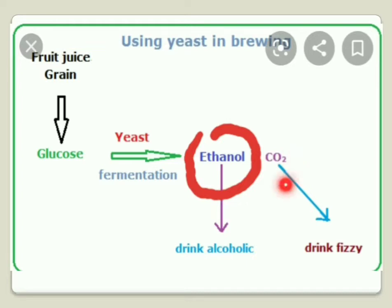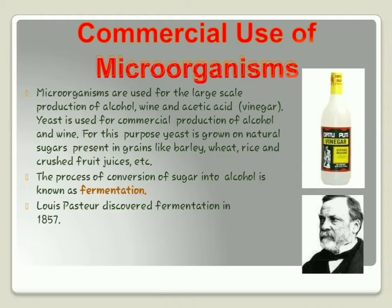This carbon dioxide is what is evolved during the process of baking bread during anaerobic respiration. This is how yeast is used in the process of producing alcohol, wine, and also acetic acid. Microorganisms are used for large-scale production of alcohol, wine, and acetic acid. Yeast is grown on natural sugars present in grains like barley, wheat, rice, and crushed fruit juices. The process of conversion of sugar into alcohol is known as fermentation. Louis Pasteur discovered fermentation in 1857.